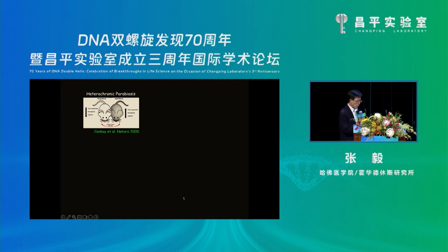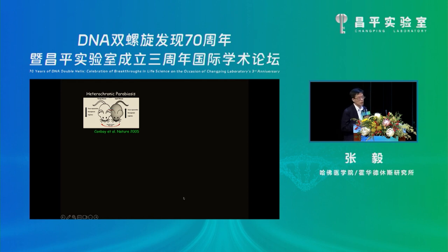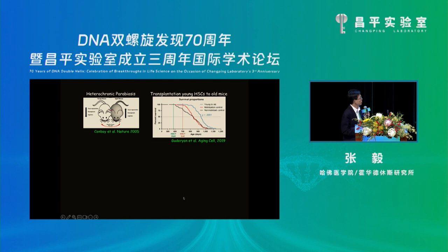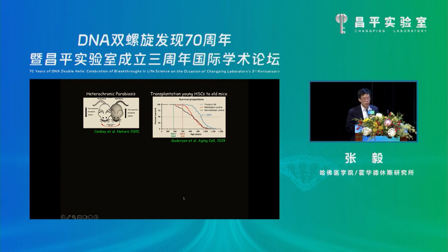About 18 years ago, Weissman and Rando's group performed an interesting parabiosis experiment where they linked the blood system of old mice with young, which resulted in rejuvenation of the old mice. During the past 18 years, many groups tried to find the magic factors in young blood that can rejuvenate, but so far there is no consensus. A few years ago, people did a simpler experiment: they transplanted hematopoietic stem cells from young into old mice, and that could rejuvenate and extend lifespan. Because hematopoietic stem cells are simpler than whole blood, we decided to work on HSCs.